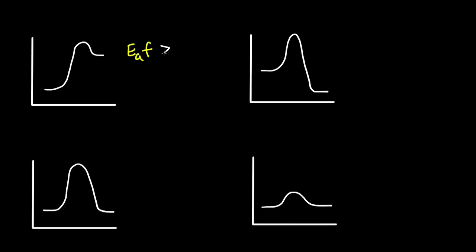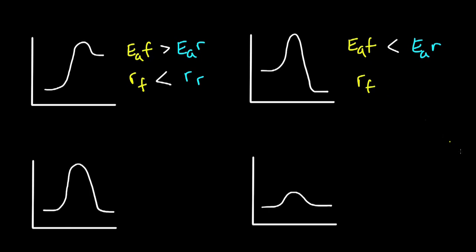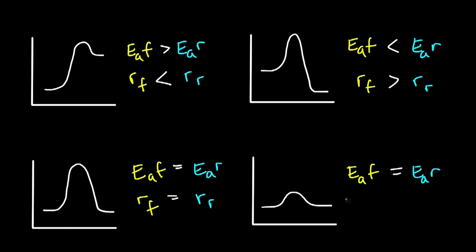In this one, the forward activation energy is higher than the reverse activation energy, so the forward rate is slower than the reverse rate. In this one, the forward activation energy is lower than the reverse activation energy, so the forward rate is faster than the reverse rate. In these two, the forward and reverse activation energies are the same, so the forward and reverse rates would be the same. In real life chemical processes, the rates of the forward and reverse reactions are often very different. Many of the reactions that you may have previously thought of as irreversible actually just have wildly different forward and reverse rates.